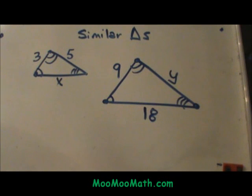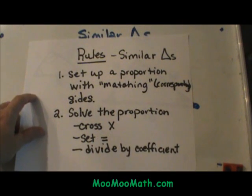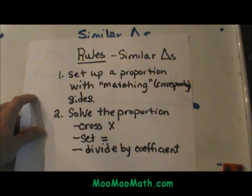The rules to set up similar triangles are as follows. You set up a proportion with the matching or corresponding sides, and then you just solve that proportion by cross multiplying. Then you set them equal to each other and divide by the coefficient to solve it.